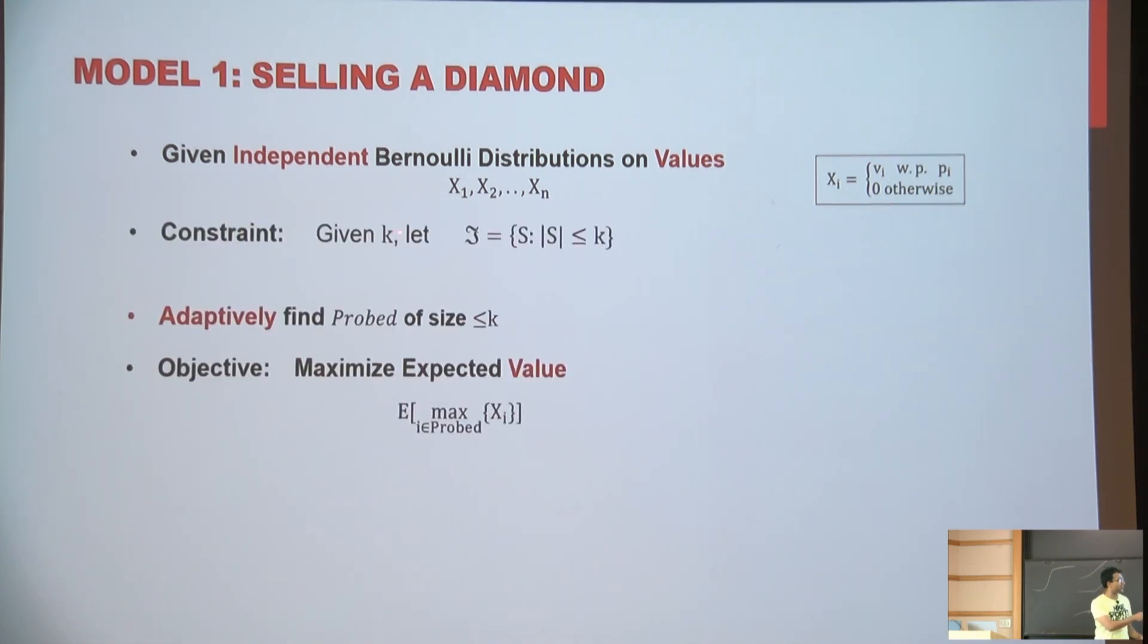And the constraint is that you cannot find out buyer values of all the buyers, all the potential buyers. You can only find out values of k of them. So for concreteness, imagine you have 100 buyers in the market. You have a budget constraint, you can only find out values of 10 of them. So out of 100 buyers, you find out values of 10 of them. Amongst the 10 you find, you'll sell it to the one who has the highest value.